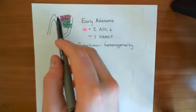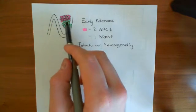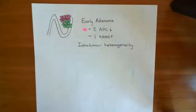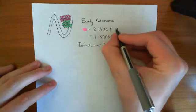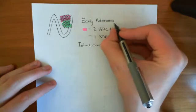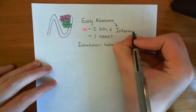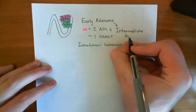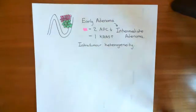So once you've got a tumour that has both these initial cells with the double hit to their APC gene and also the gain of function mutation in the KRAS gene, that is then known as an intermediate adenoma. So now it's progressed from being an early adenoma to being an intermediate adenoma, and it will grow substantially in this process of moving from an early adenoma to an intermediate adenoma.